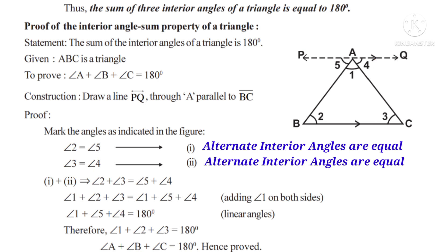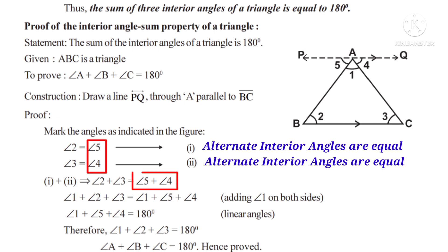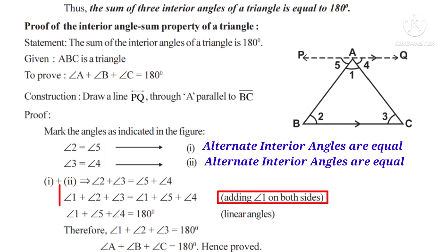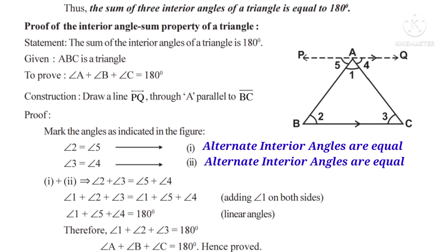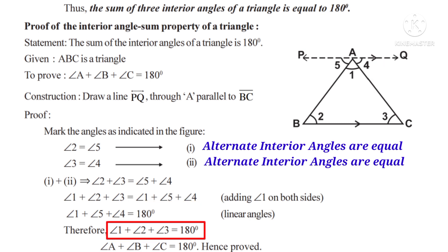Now, let us add equations 1 and 2. Then, angle 2 plus angle 3 is equal to angle 5 plus angle 4. Adding angle 1 on both sides, we get angle 1 plus angle 2 plus angle 3 is equal to angle 1 plus angle 5 plus angle 4. Observe that the right-side angles — angle 1, angle 5, angle 4 — lie on the same line PQ, so their sum is equal to 180 degrees. Therefore, angle 1 plus angle 2 plus angle 3 is equal to 180 degrees. Here, angle 1, angle 2, angle 3 denote angle A, angle B, angle C. So, angle A plus angle B plus angle C is equal to 180 degrees. Hence, proved.